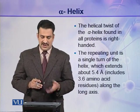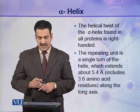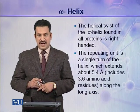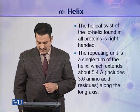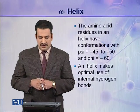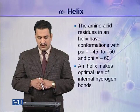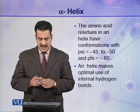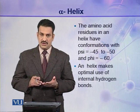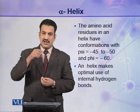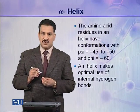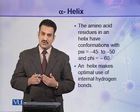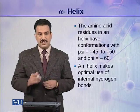The repeating unit is a single turn of the helix, which extends about 5.4 angstroms and includes about 3.6 amino acids along the long axis of the helix. The amino acid residues in the helix have conformations with psi values ranging between minus 45 to minus 50 and phi values of about minus 60. The peptide bond is rigid and does not rotate, but the adjacent bonds rotate at these angle values.